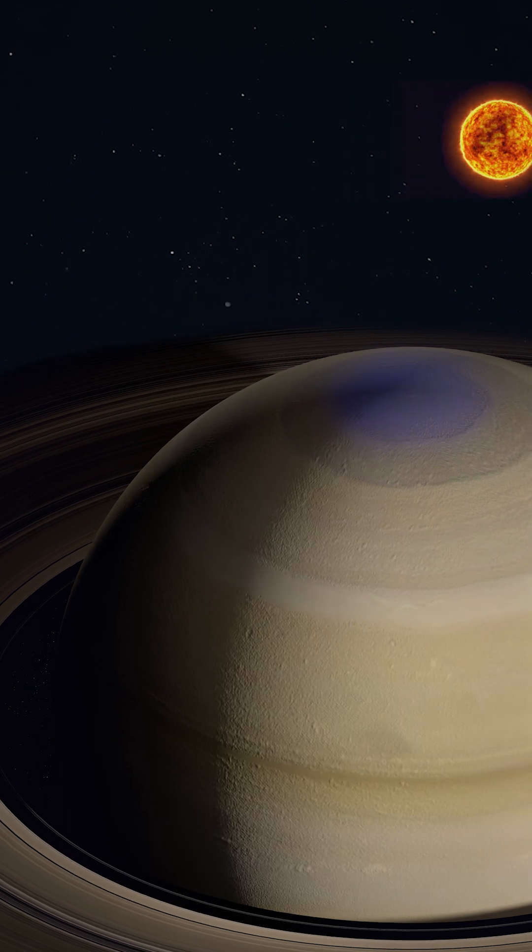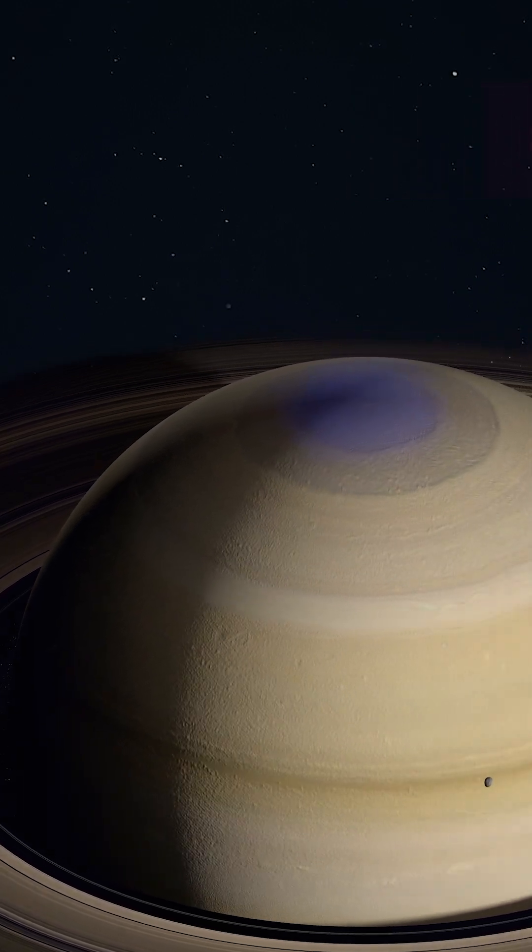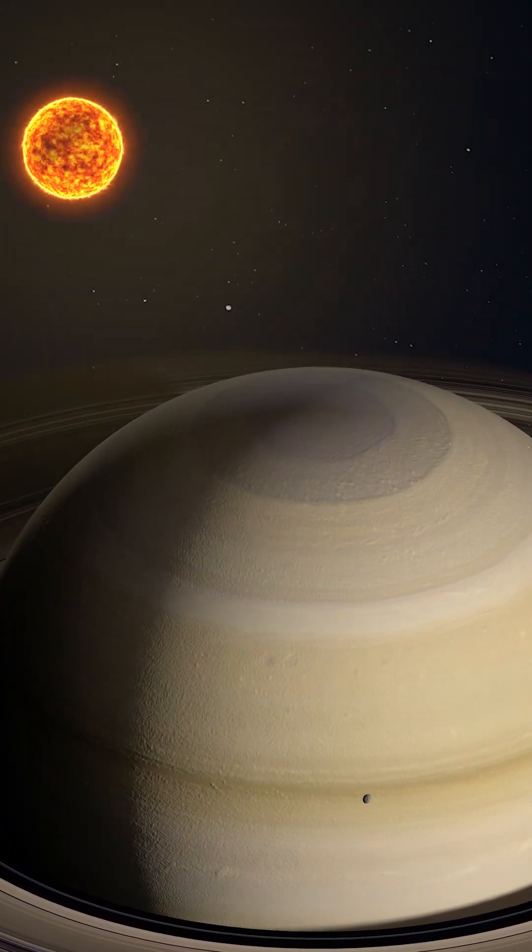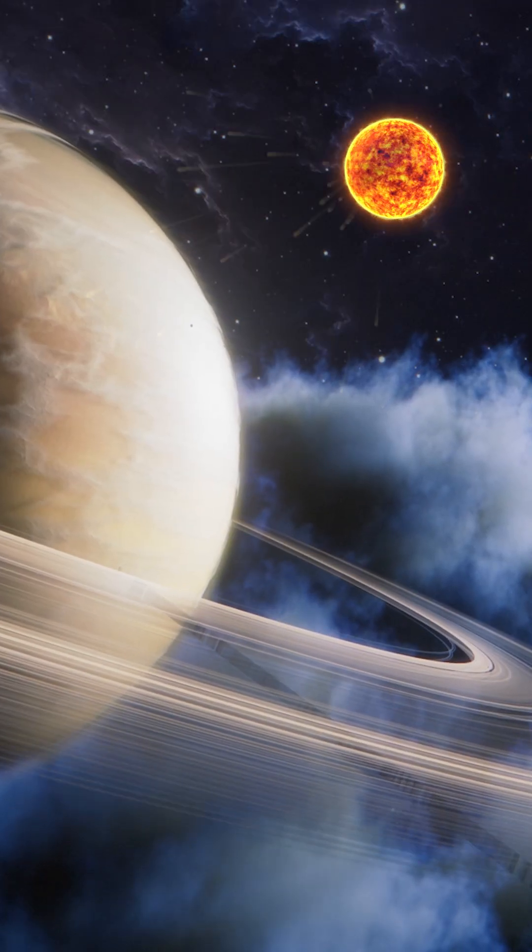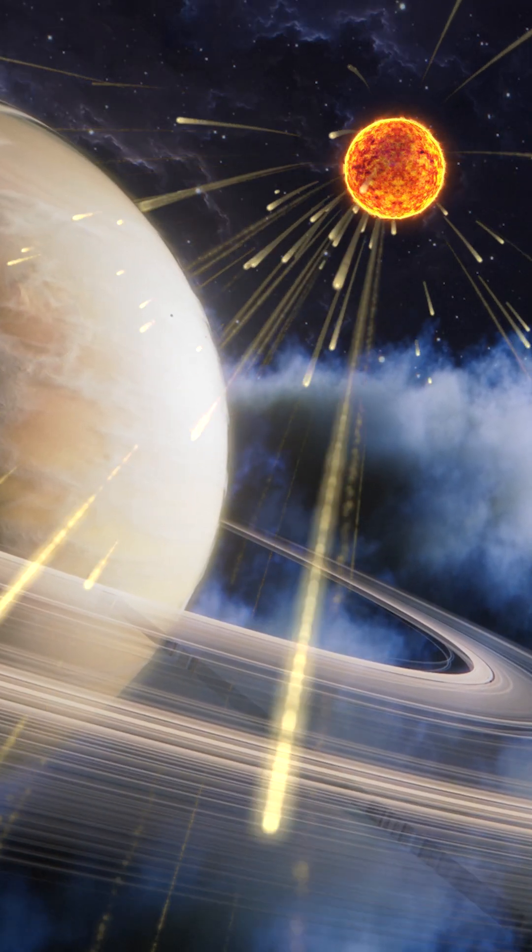And the hexagon changes color too. During Saturn's winter, it appears bluish. And in summer, it turns a golden hue. Scientists think this might be due to chemical reactions driven by sunlight during Saturn's changing seasons.